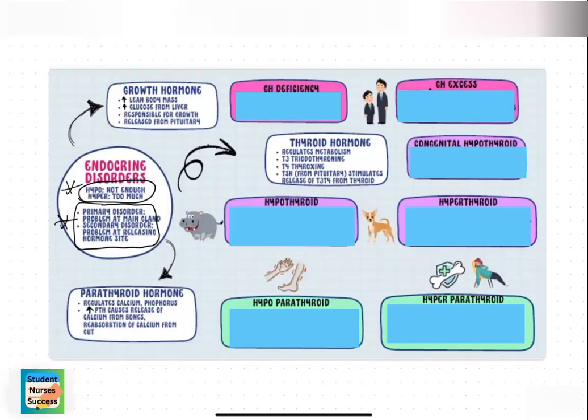The endocrine system has some checks and balances in it, and most glands make a hormone based on whether or not the releasing hormone is being made. In the case of a secondary disorder, the problem is at the releasing hormone site, not at the main gland site, although the main gland will react with either making too much or too little if the releasing gland is not working properly. An important piece of the endocrine system is to understand what the actual hormone does in the body, and then you can easily make the connection of what too much or too little of that means for the body.